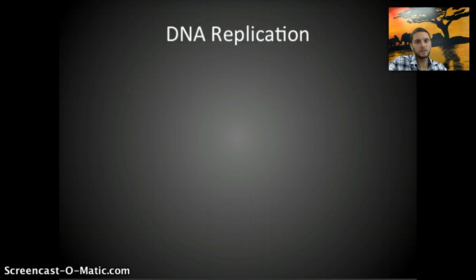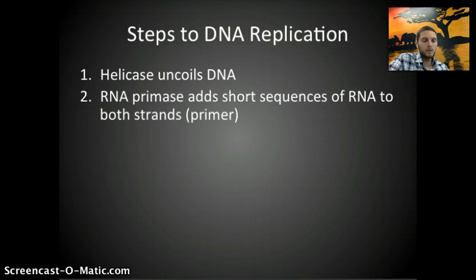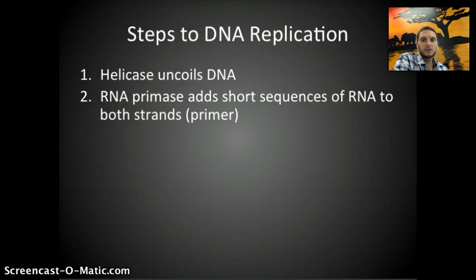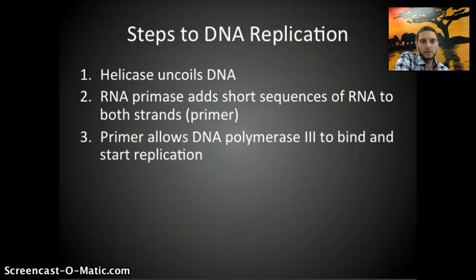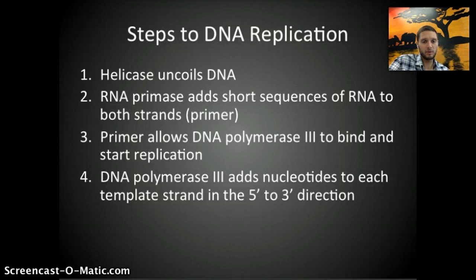Let's look at the different steps written out for what happens during DNA replication. The first step is the helicase enzyme uncoiling the DNA. Then an RNA primer — called RNA primase — adds a short sequence of RNA to both strands to act as an initiator to start DNA replication. That primer allows DNA polymerase 3 to bind and start replication, adding nucleotides to each template strand in the 5' to 3' direction. New nucleotides are added at the 3' end.